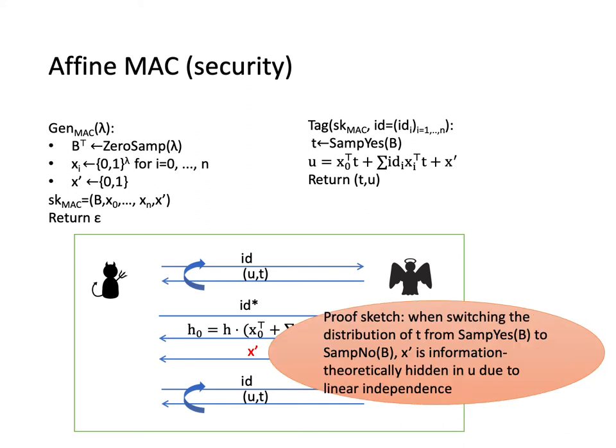The security proof follows from the fact that when switching the distribution of T from SampYes B to SampNo B, x' is information theoretically hidden in U due to linear independence. We omit the details here and please see our paper for more details.